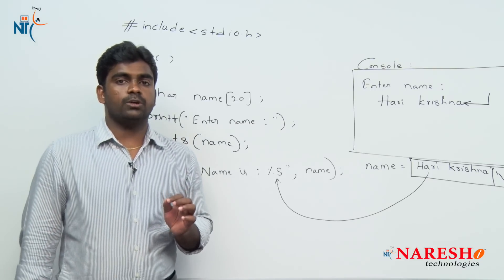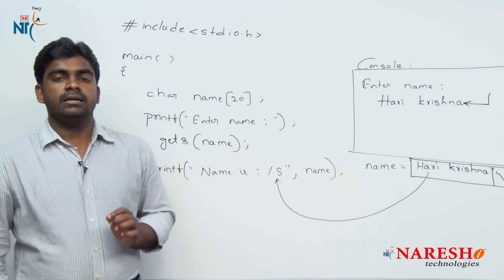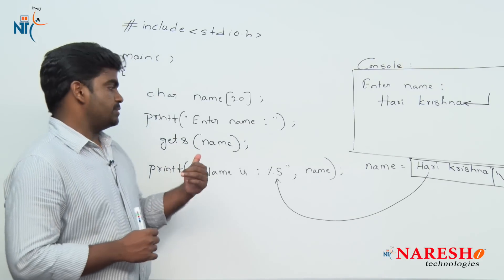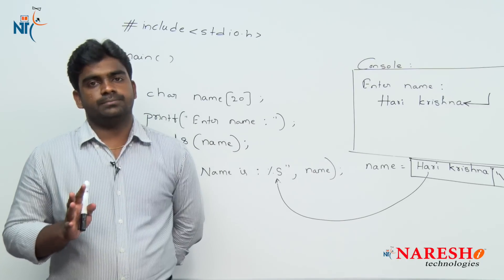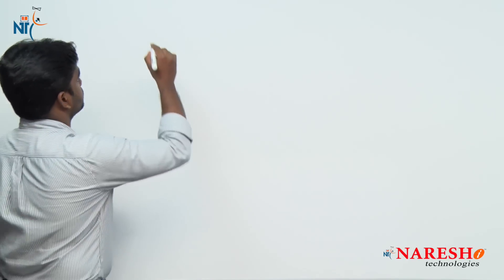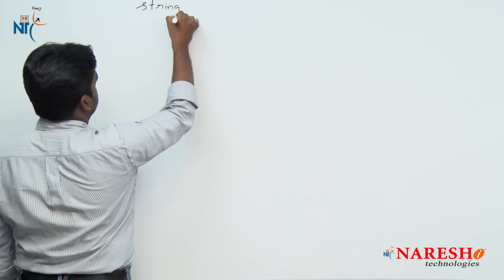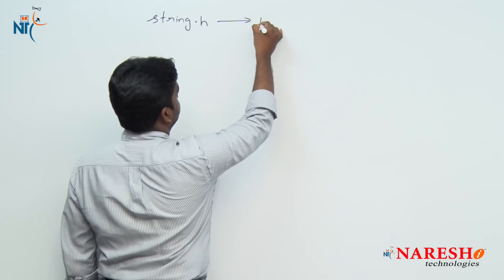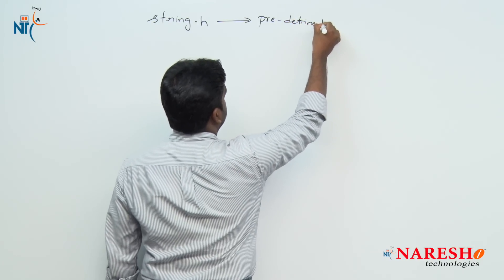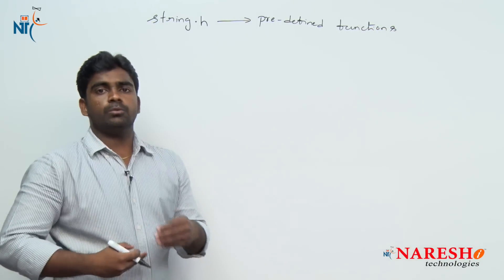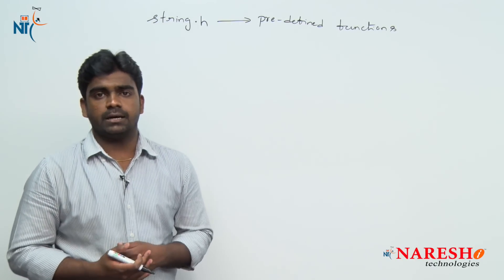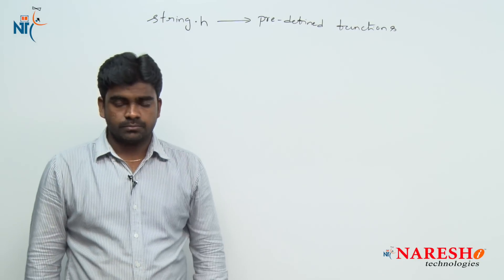If it is a single word, we can use %s with scanf. If it is a multi-word string, it is better to use the gets() function — whether you want to read a sentence or a paragraph. We will see one more example. There is a header file called string.h. The string.h header file contains many predefined functions used to process strings. If you want to manipulate string data, we can use the string.h library functions.